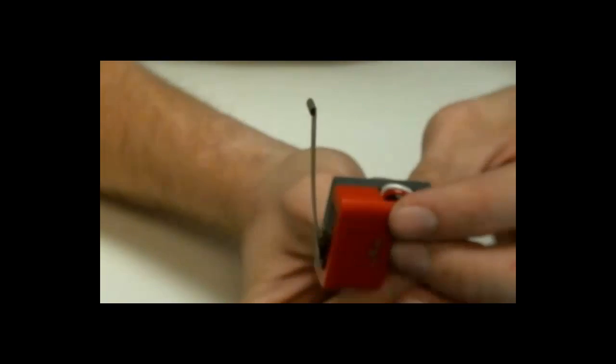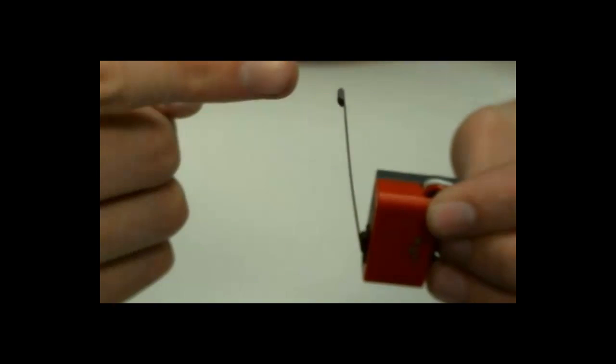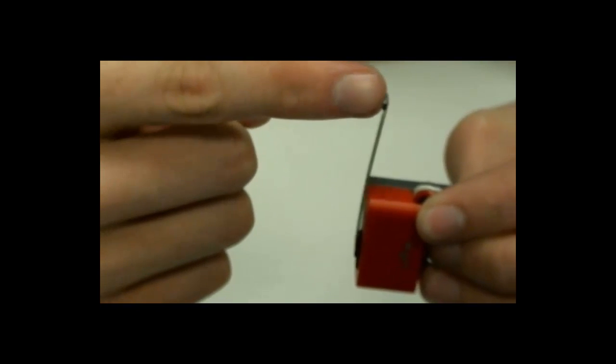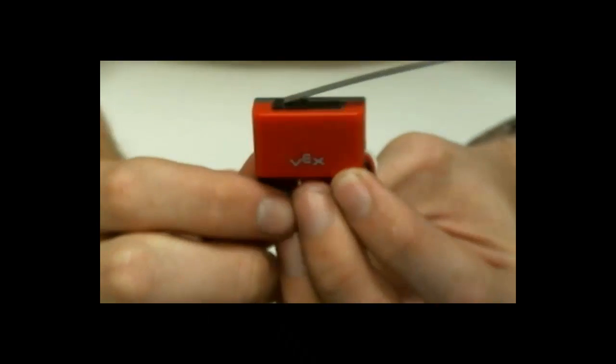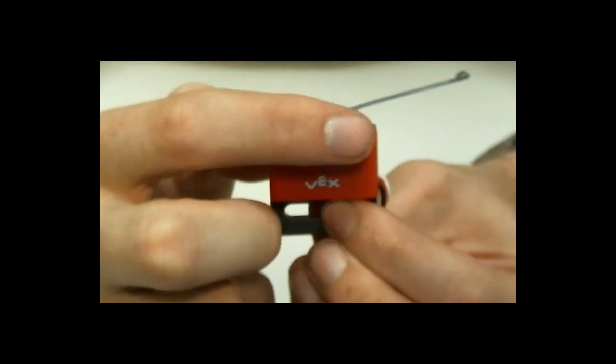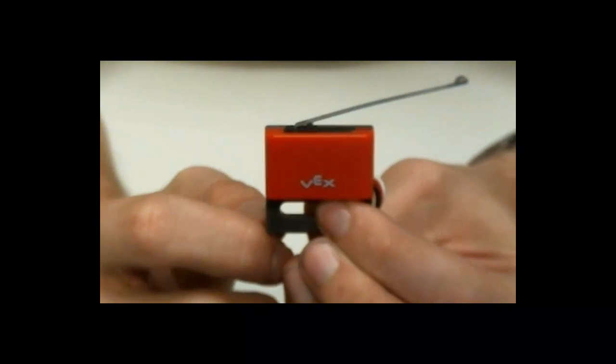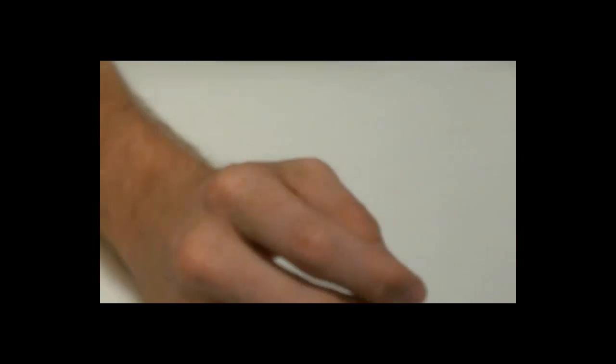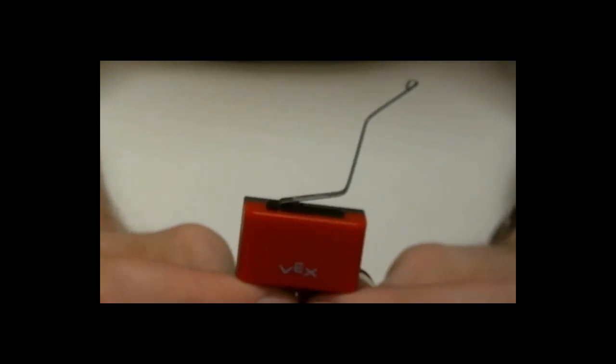And just the opposite, if you mount the switch vertically, the action that trips it will be horizontal. Now if you notice, the lever arm is very close to the limit switch. That doesn't give you a lot of room to play with. So a very popular modification is to actually bend the lever arm.